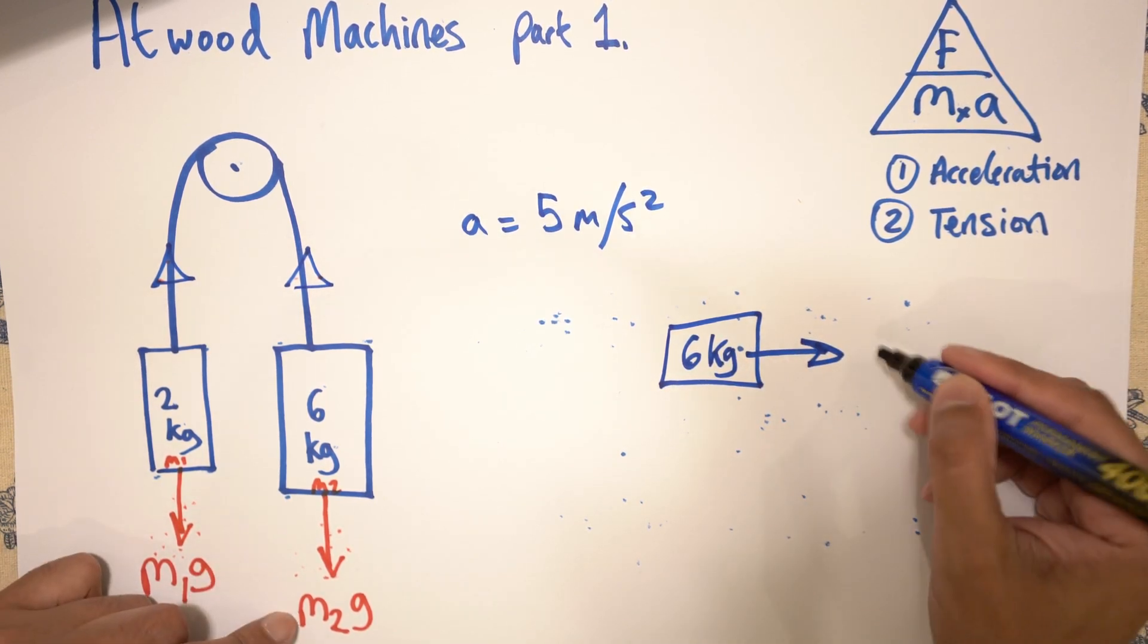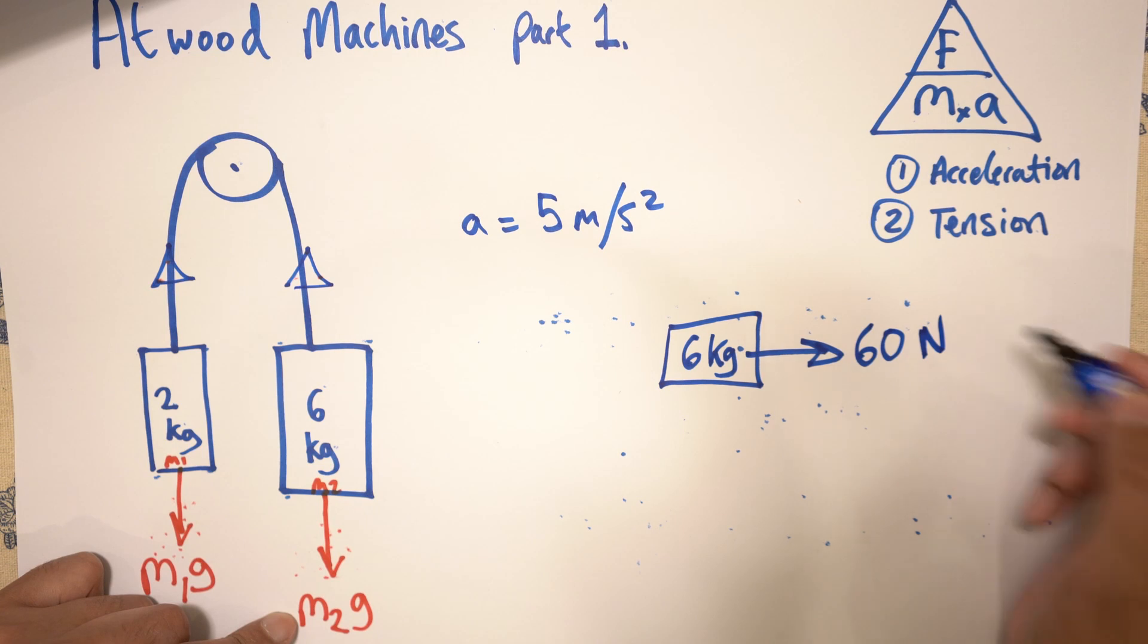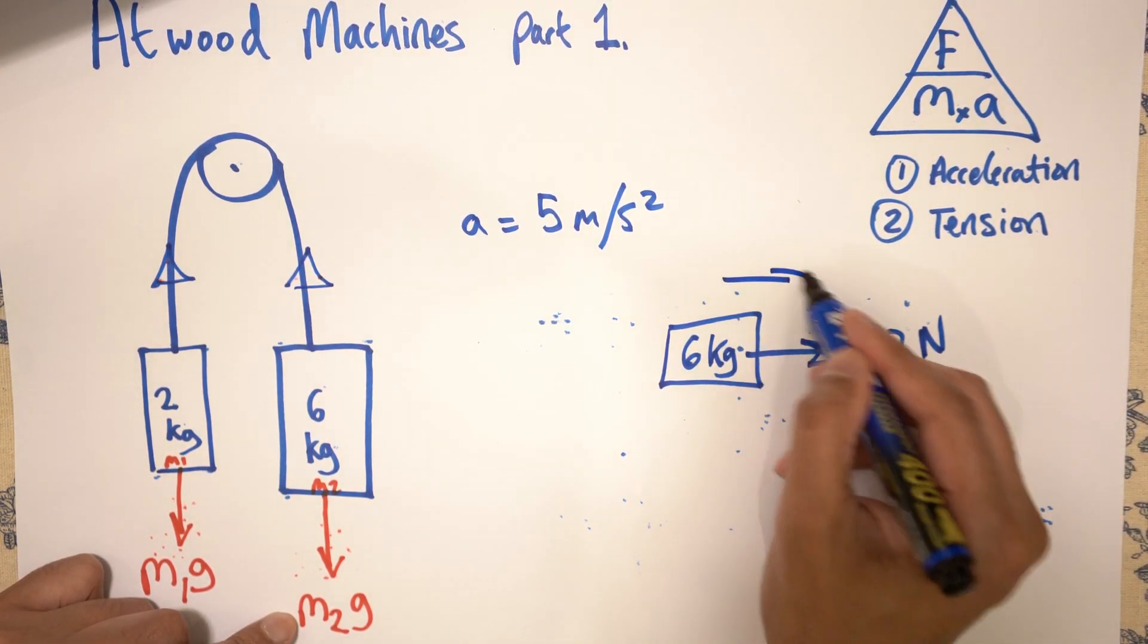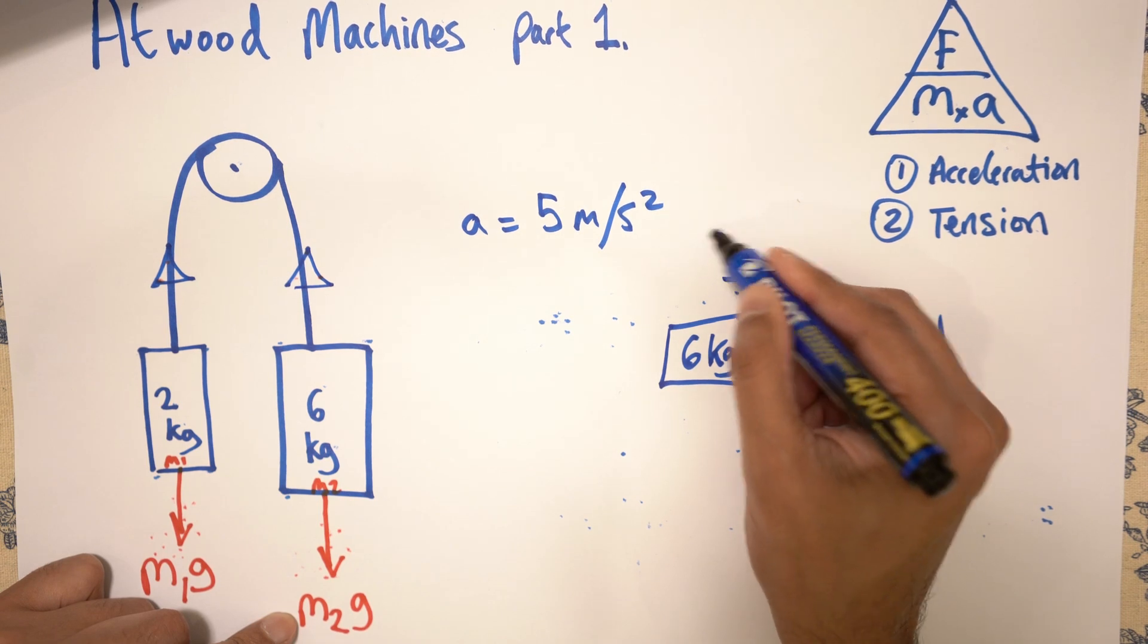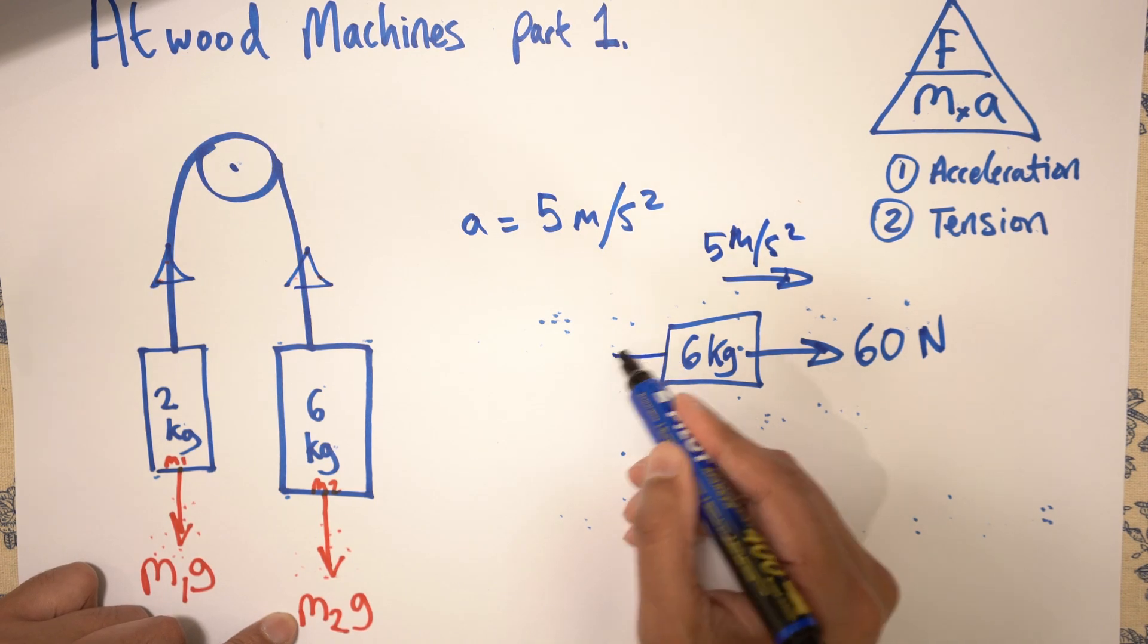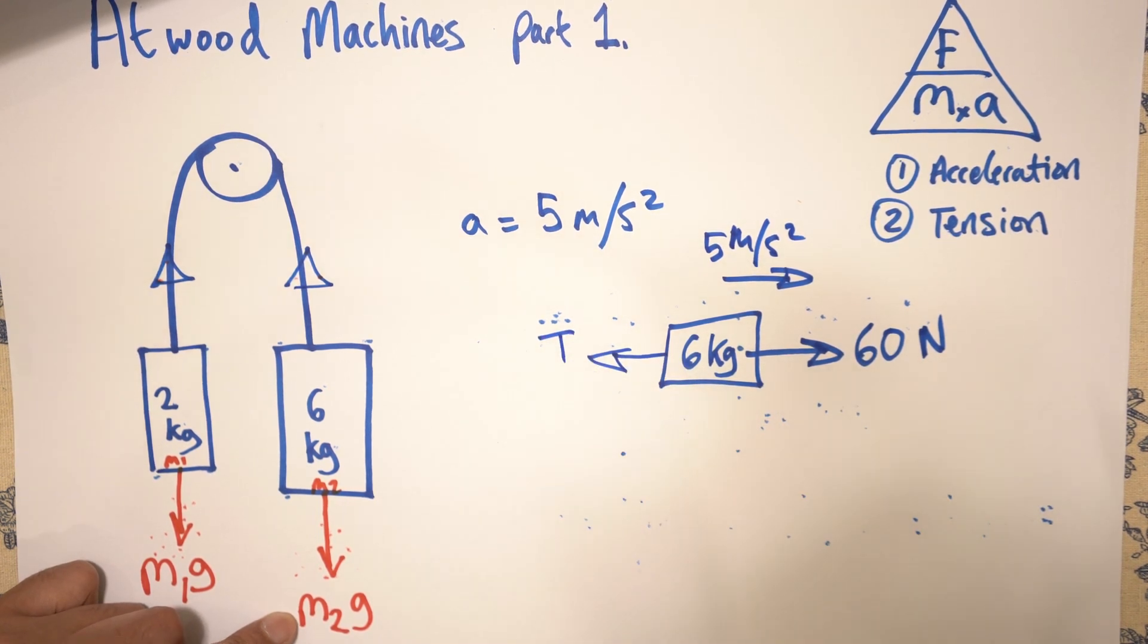So we have now 6 kg. We've got a m2g, which we said was 60 newtons. You've got an acceleration going that way. And that acceleration is 5 meters per second squared. And we've got an unknown tension over here.